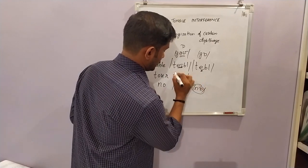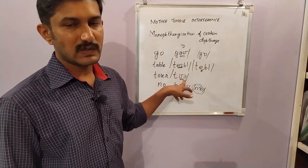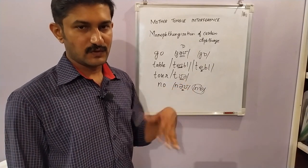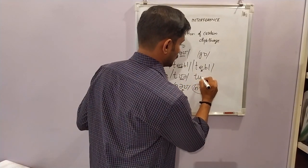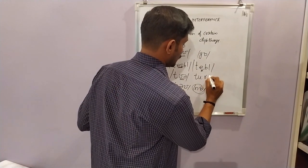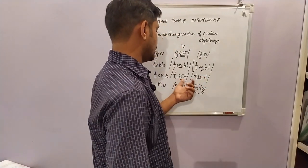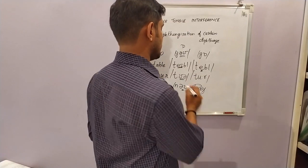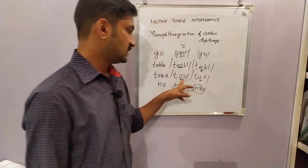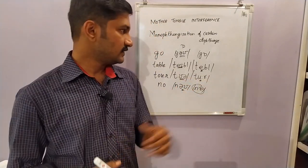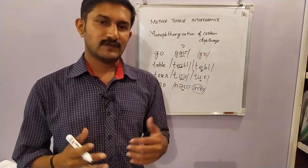Most Indian learners pronounce 'tour' as 'too' — we replace the diphthong 'our' with the monophthong 'ooh' and add an 'r' sound also. So it is 'tour'. That is the monophthongization of certain diphthong sounds.